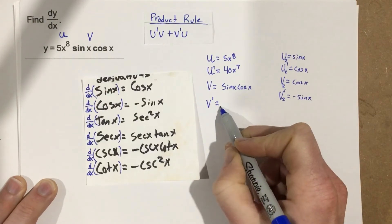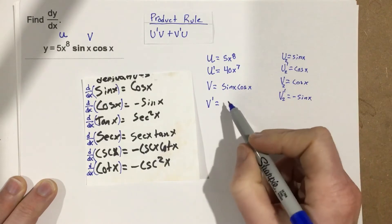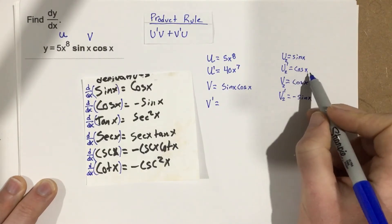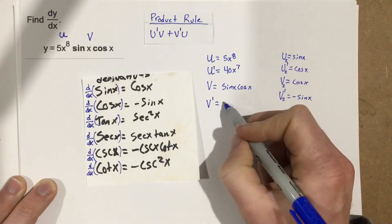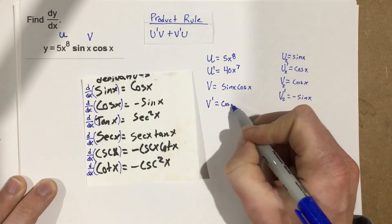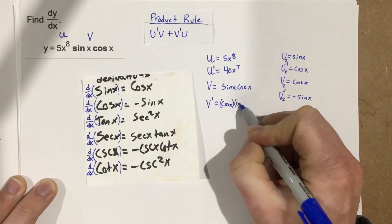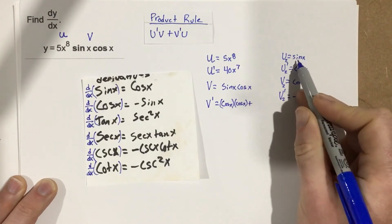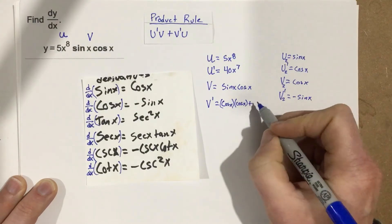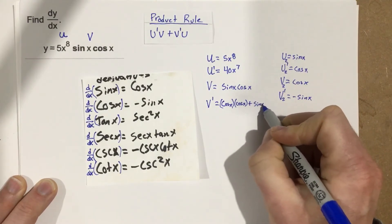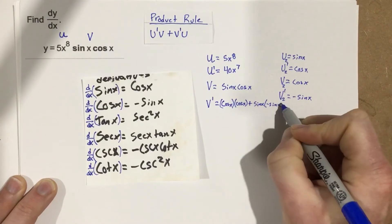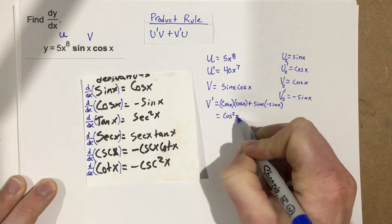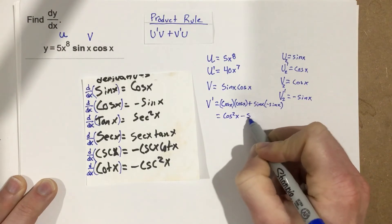So v prime is going to be, we're going to go ahead and do u prime v. So we have cosine x times cosine x. This is going to be cosine x times cosine x plus, and then we have sine x times negative sine x. So we have sine x times negative sine x, which is going to equal cosine squared x minus sine squared x.